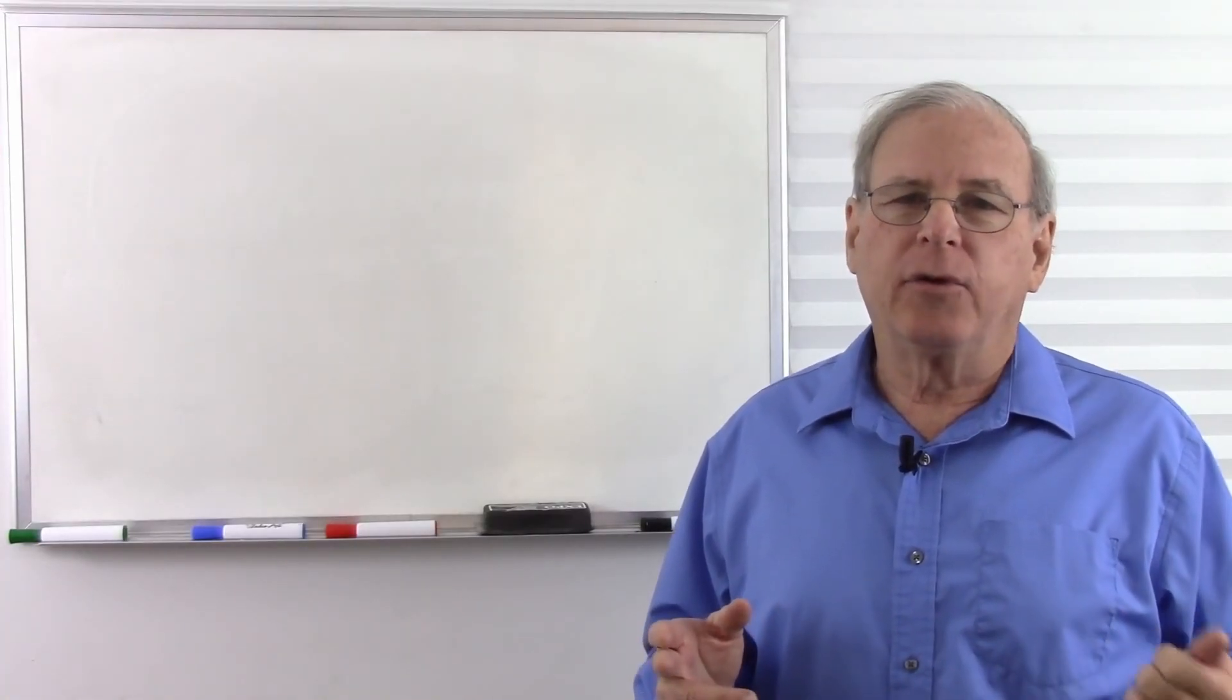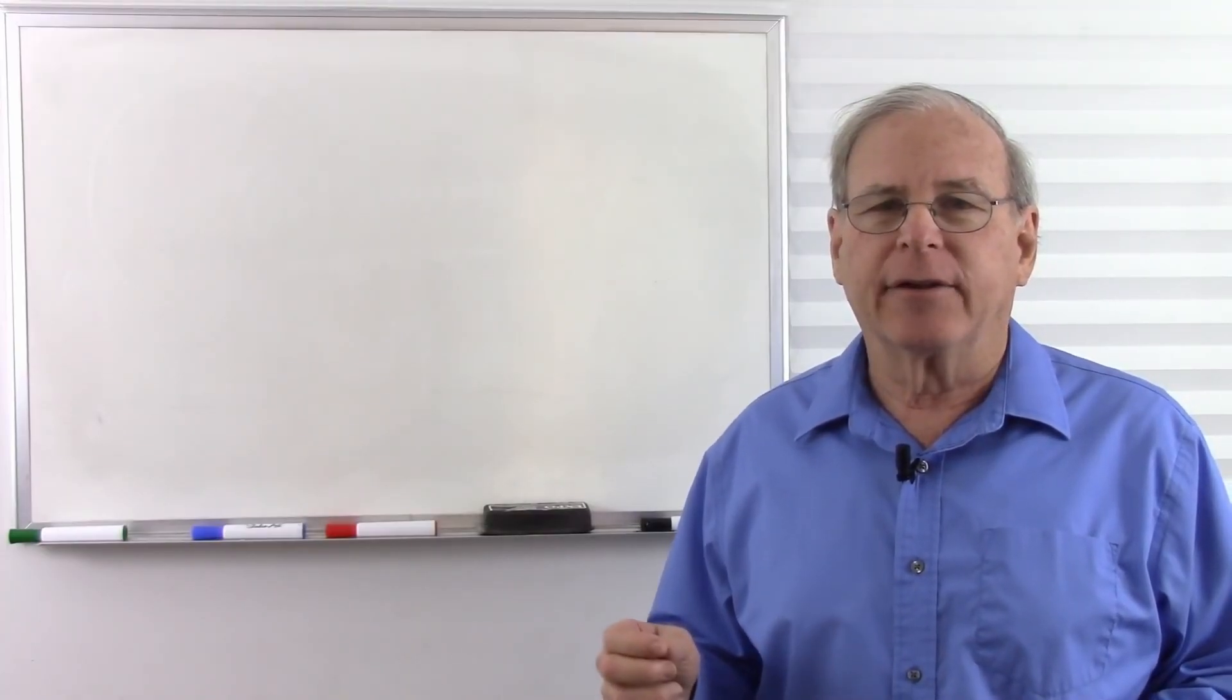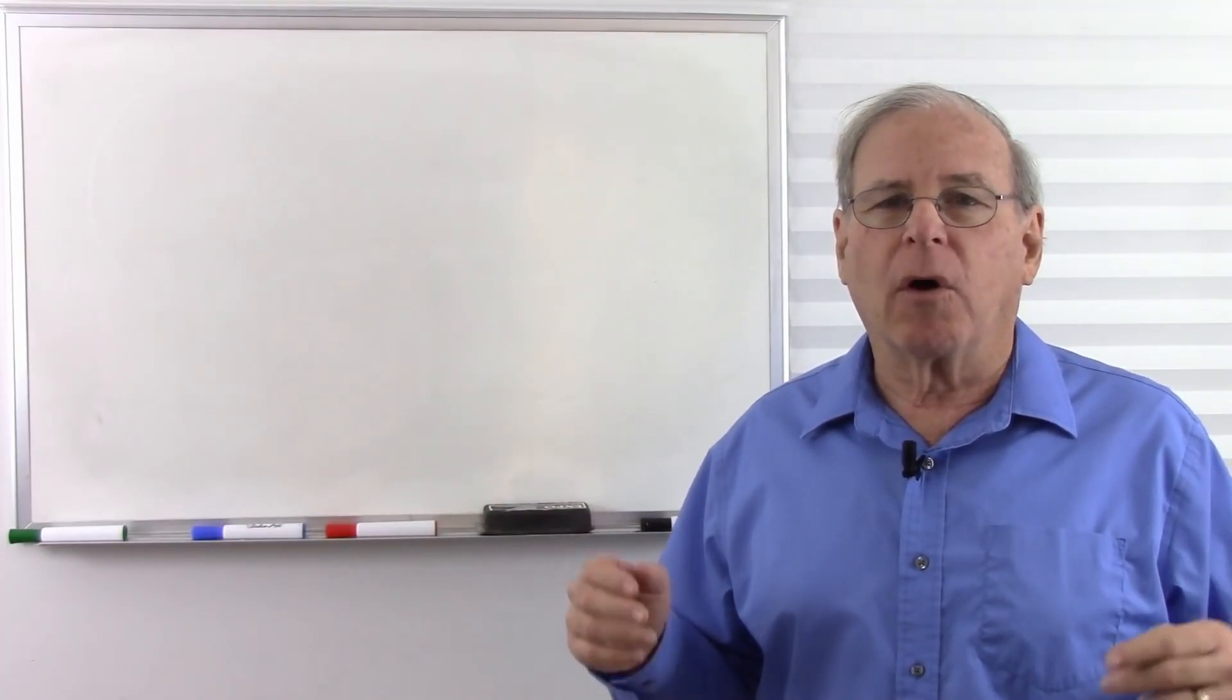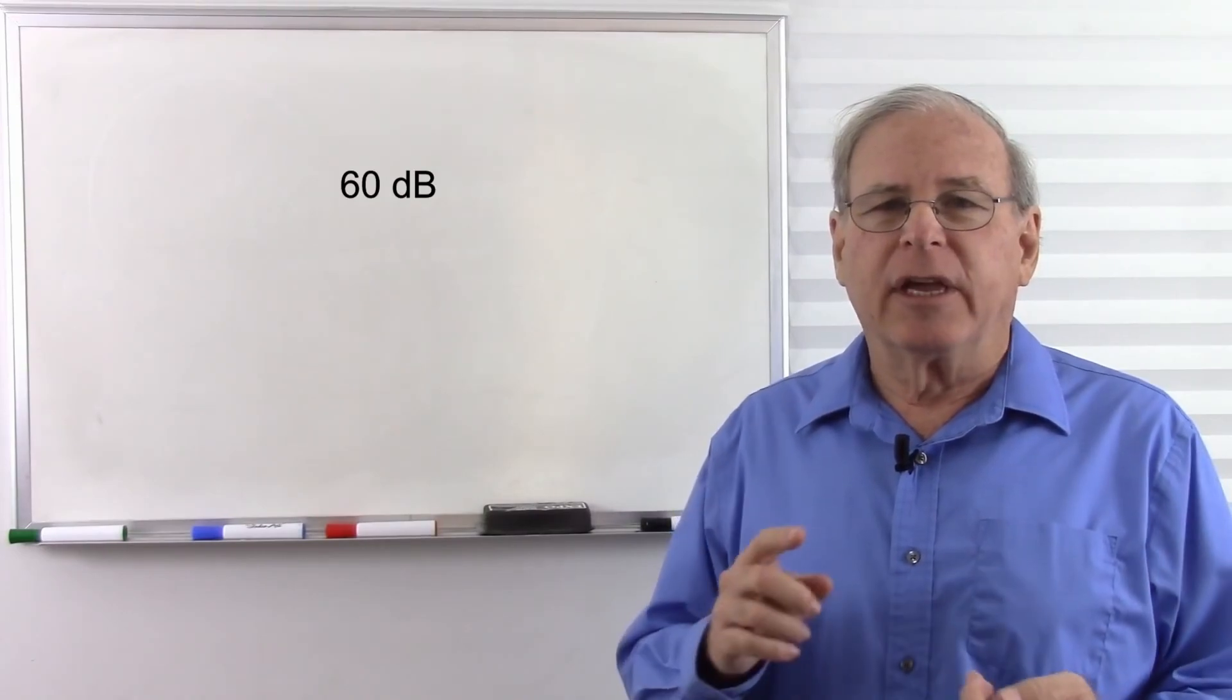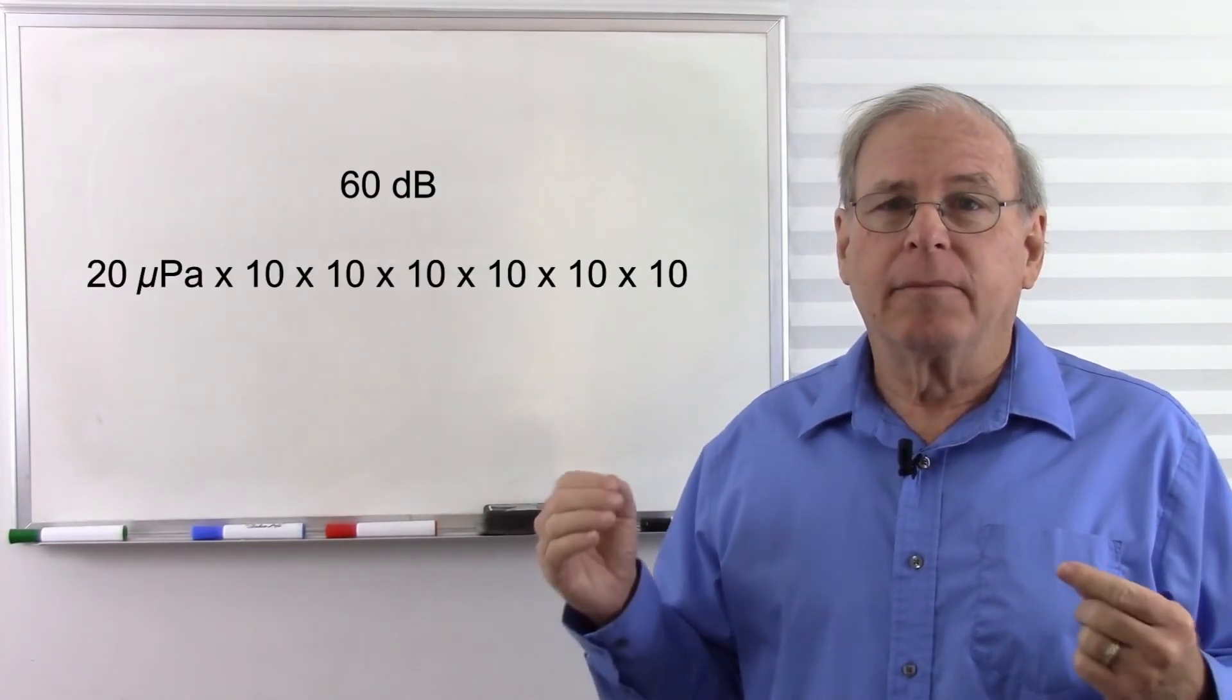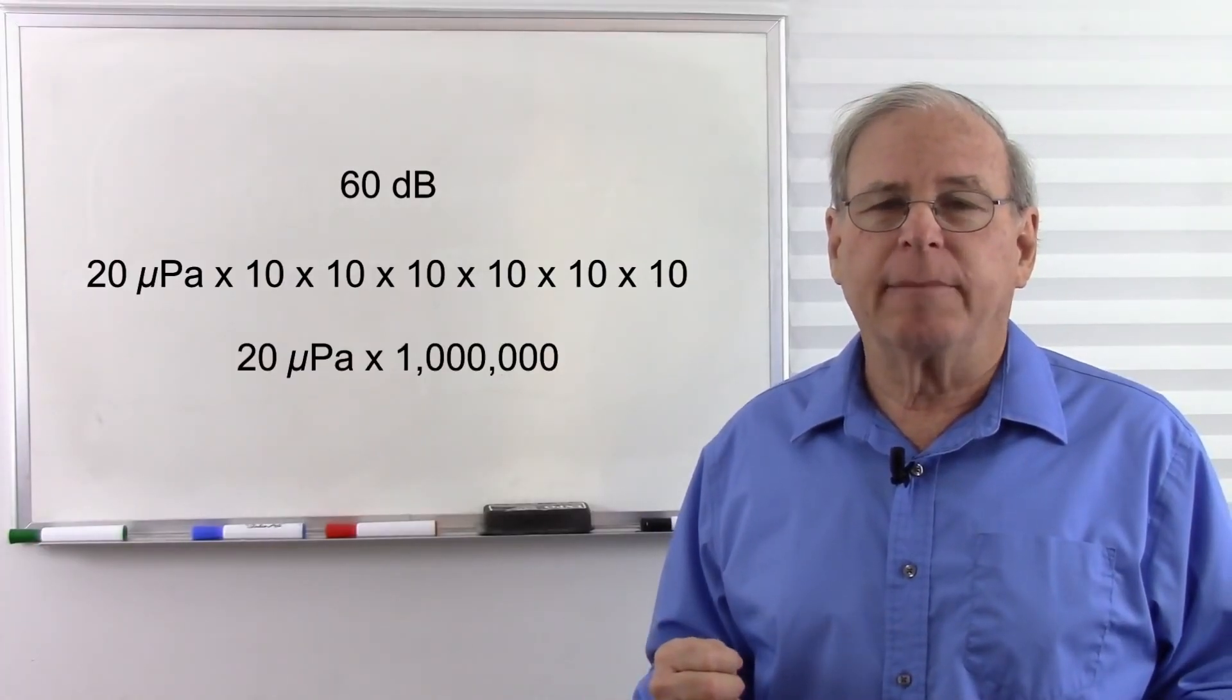Now notice we had a starting point, 20 micropascals, and then compared another sound pressure level to that. When we're dealing with decibels, we're always dealing with one level compared to another. We're always dealing with a ratio of numbers. So now when somebody says a sound is 60 decibels, we know that is 10 times 10 times 10, 6 times, times 20 micropascals, or one million times 20 micropascals.